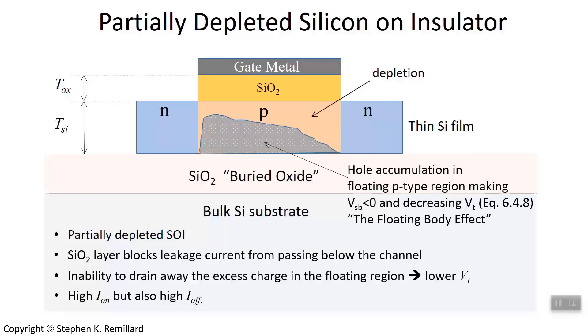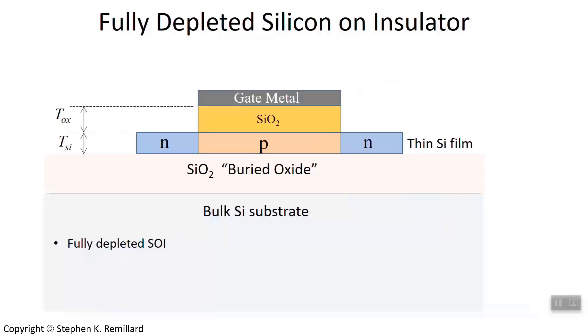So one earlier solution was to go with a thinner layer of semiconductor, in which case that channel region is fully depleted. And you end up without having the impact ionization because the whole thing is in depletion now. So you don't have the high energy electrons careening across, creating the excessive hole density.